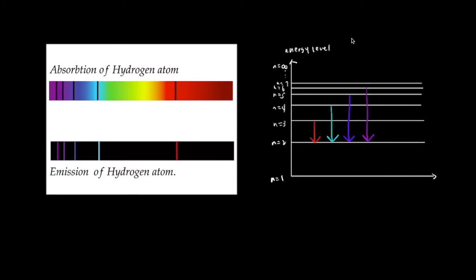Recapping: the first line from the right — the red line in the hydrogen emission spectrum — is caused by electrons transitioning from n=3 to n=2. The next line, blue-green light, is caused by electrons transitioning from n=4 to n=2, the indigo light by n=5 to n=2, and the violet light from n=6 to n=2.